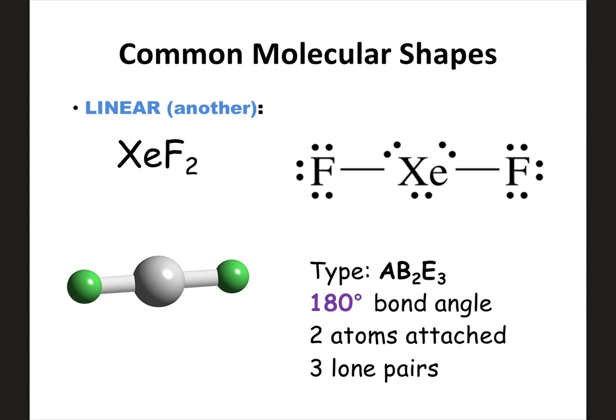This is a new shape for AP: another form of linear where you have two things attached but three lone pairs on the center atom. It still ends up being linear because being 180 degrees in a line keeps all the valence electrons as far apart as possible. You can see this for XeF2 — two things attached to the center and three lone pairs on the center atom. This is a new one for AP you've got to watch out for.